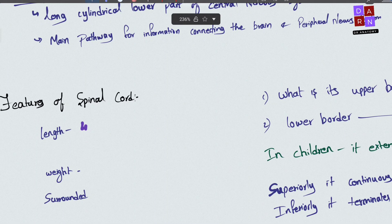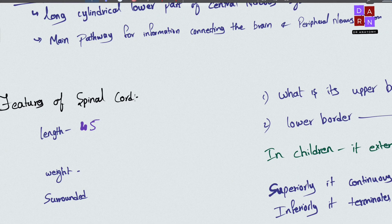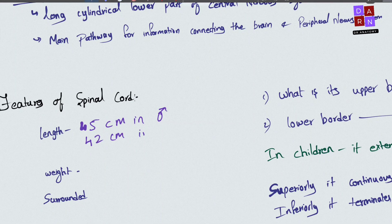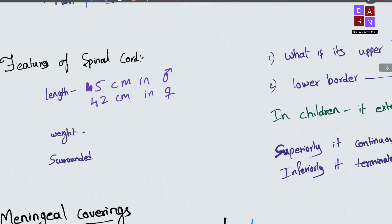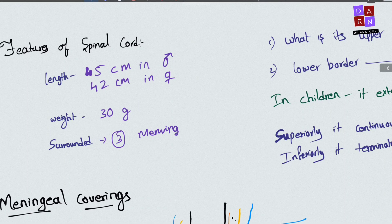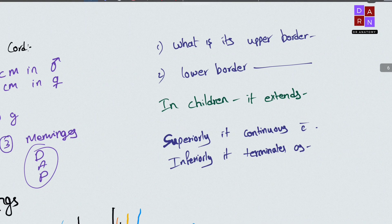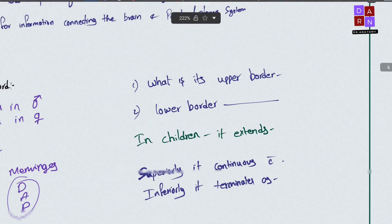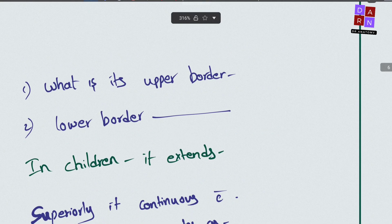The length of the spinal cord is 45 centimeters in males and 42 centimeters in females. Its weight is about 30 grams. It is surrounded by three meninges: dura mater, arachnoid mater, and pia mater.